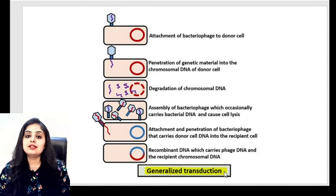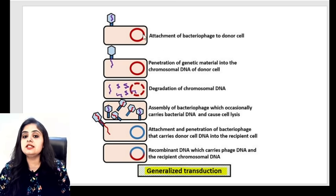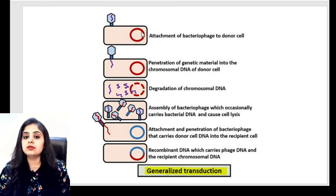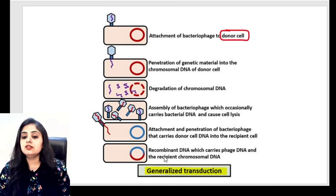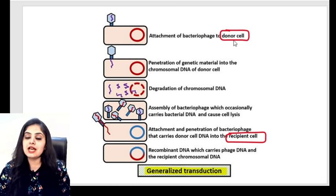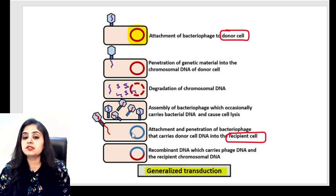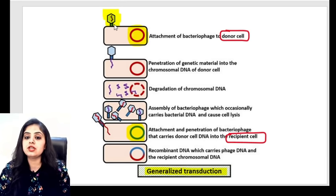Let's look at generalized transduction. This is a donor bacterium — bacterial DNA is always circular. From here, something is going to travel to the recipient bacterium. You want the DNA from the donor to somehow reach the recipient, and who comes to the rescue? That tadpole-shaped bacteriophage. The bacteriophage first attaches to the donor cell, then penetrates it, and its DNA enters the donor bacterium.